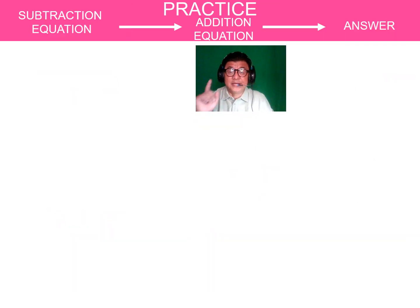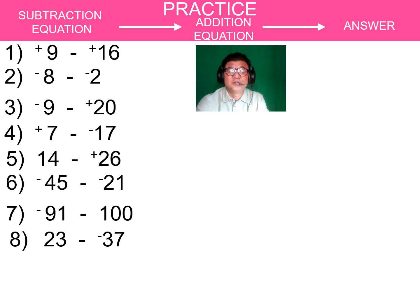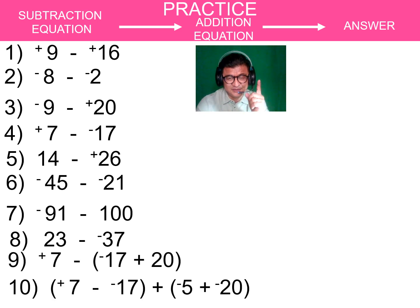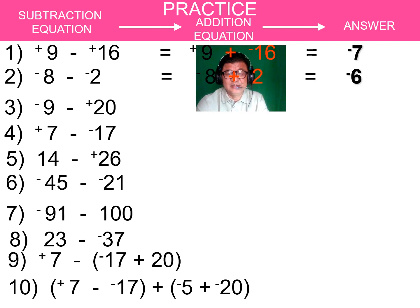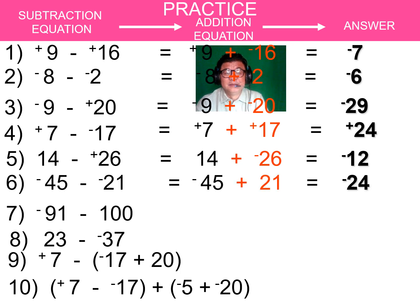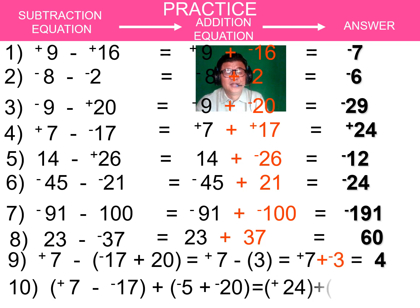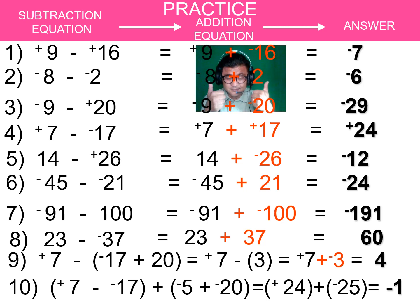You're now ready to practice on your own. Write it on a sheet of paper or do it mentally, then play the video to see the final answers. Number 1: negative 7. Number 2: negative 6. Number 3: negative 29. Number 4: 24. Number 5: negative 12. Number 6: negative 24. Number 7: negative 191. Number 8: positive 60. Number 9: 4. Number 10: negative 1. What's your score? Don't forget — KCO: Keep, Change, Opposite.